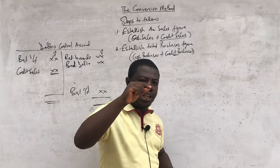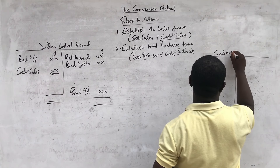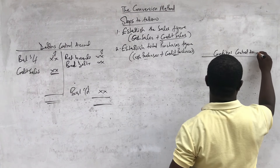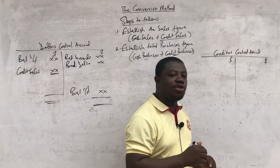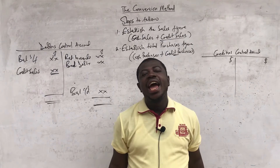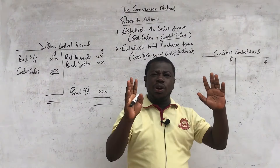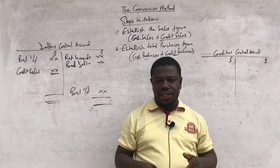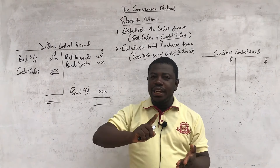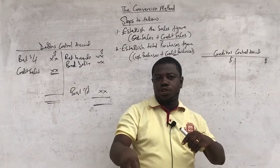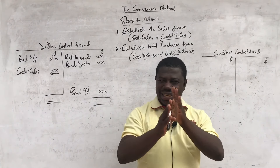You need your knowledge of creditors control account here. You are going to use the information from the question to prepare the creditors control account. To get a creditors control account, go through the question — every item or balance that belongs in a normal creditors control account, just include it. What you are doing is preparing a control account, so just go through the question. It could be in the bank or cash book, the bank statement, a list of balances, or the additional information. You know the things that should be in a creditors control account — the moment you come across them, just lift them and bring them. As easy as ABC.